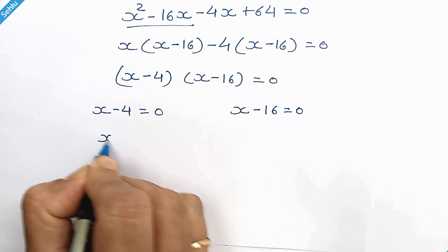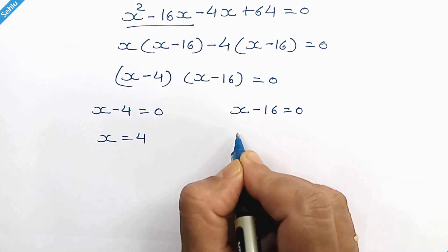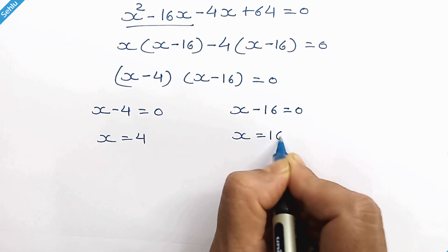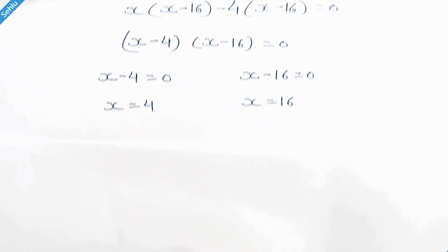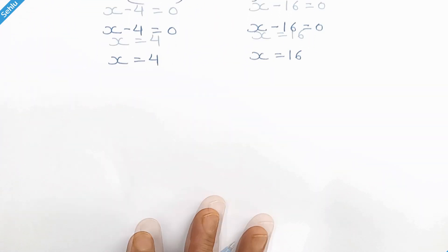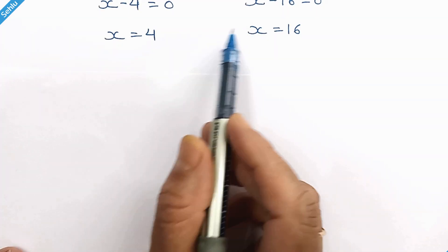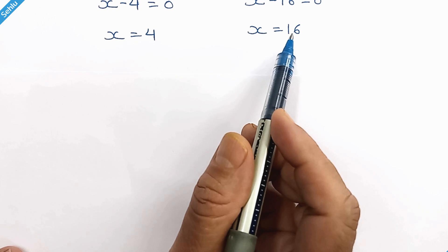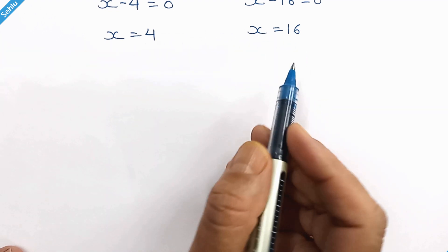So we have x equals 4 and x equals 16. We need to verify both because one of them may be incorrect. Let's verify.